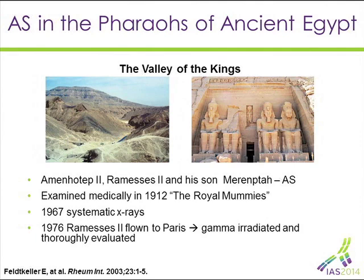I asked many rheumatologists what is the earliest example of ankylosing spondylitis. The majority of people that I talked to said that it was well-documented in the pharaohs, in the mummy's artifacts that have been studied extensively over the past century and a half. As a starting point, I will assert that this is probably not true, and I'll give you the 30,000-foot view of why this is.